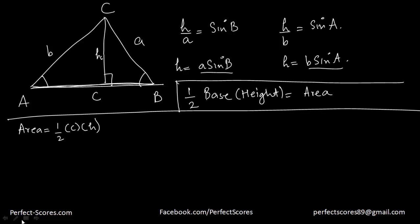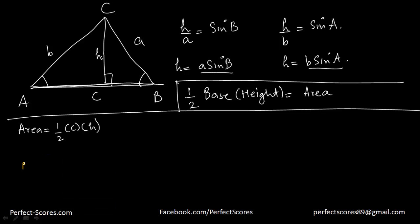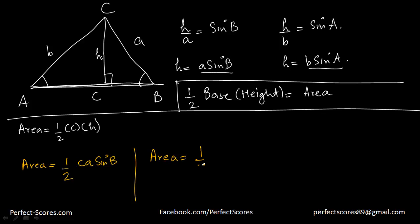So the area of a triangle is equal to half times C times H, where H can be written as A sin B. Or the area of a triangle can also be equal to half times B sin A times C, which is written as half BC sin A.